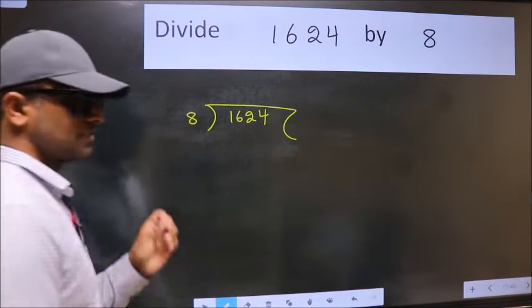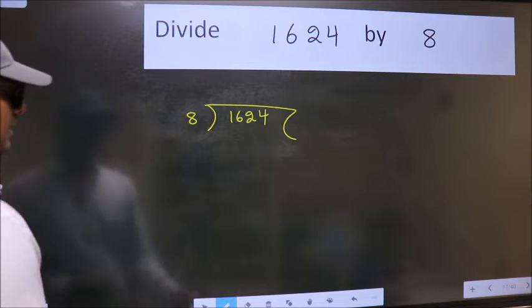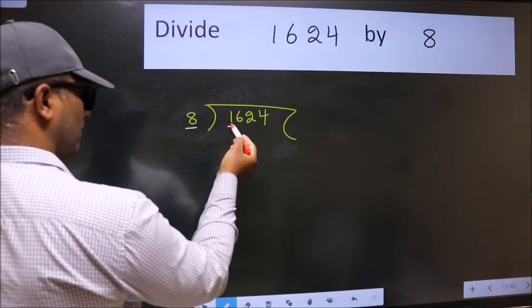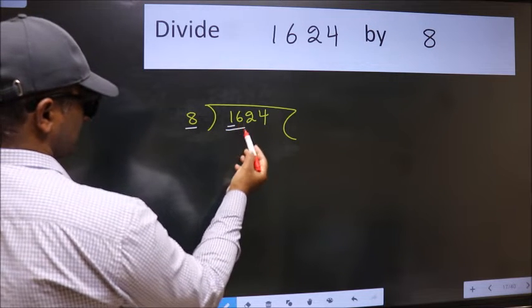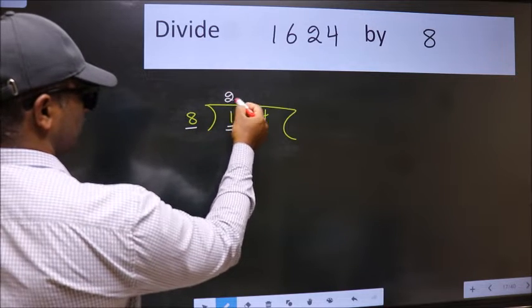This is your step 1. Next, here we have 1 and here 8. 1 is smaller than 8. So, take 2 numbers, 16. When do we get 16 in the 8 table? 8 times 2 is 16.